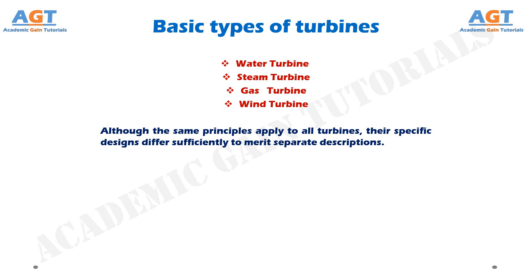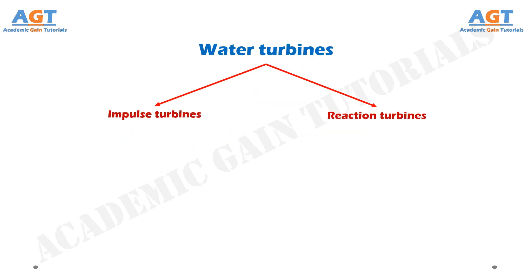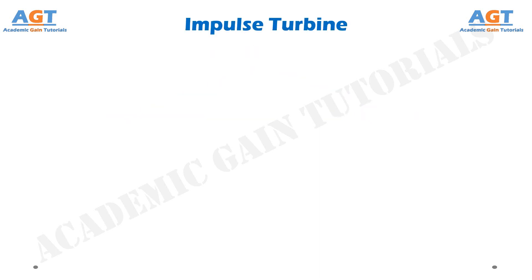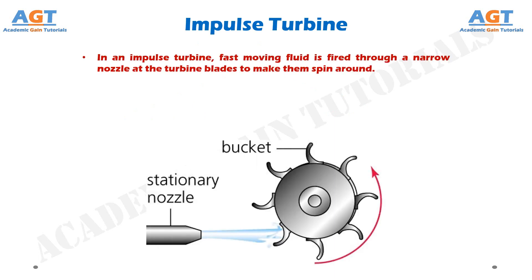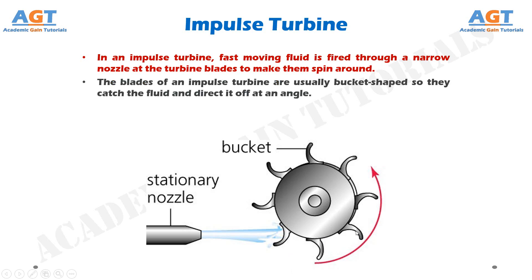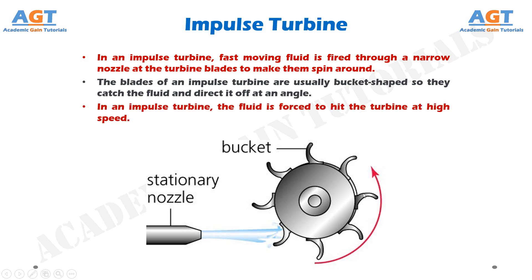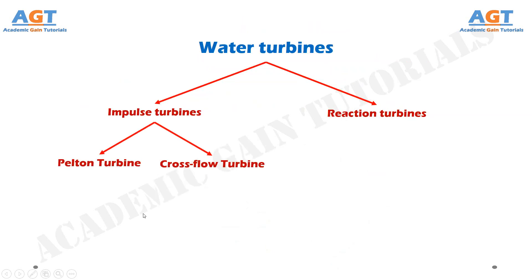We will learn about all these types of turbines and their applications. Let's start with water turbines. Water turbines are mainly of two types: impulse turbines and reaction turbines. In an impulse turbine, fast-moving fluid is fired through a narrow nozzle at the turbine blades to make them spin around, as we can see in this figure. The blades of an impulse turbine are usually bucket-shaped so they catch the fluid and direct it off at an angle. The fluid is forced to hit the turbine at high speed. Impulse turbines are again of two types: Pelton turbine and cross-flow turbine.